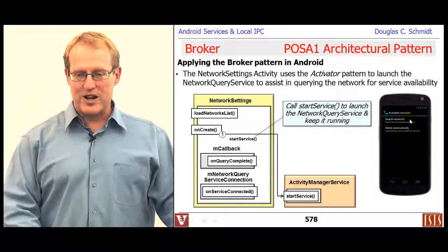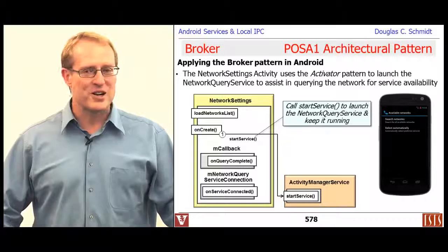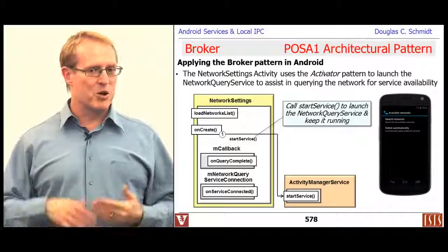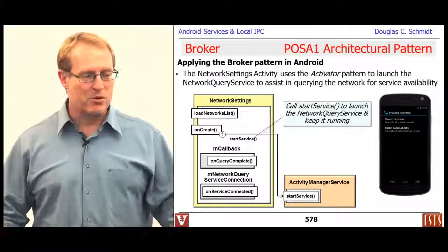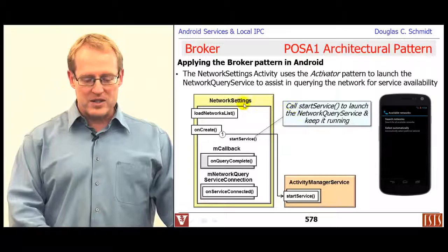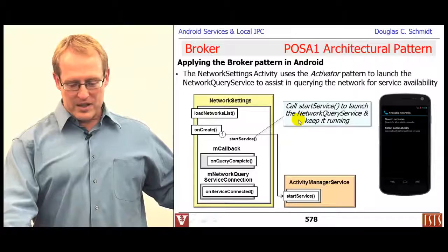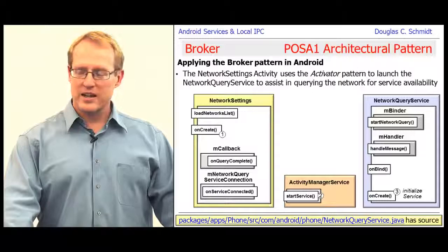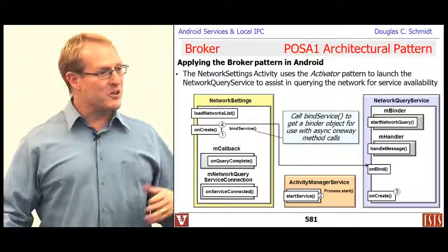This example uses the Network Settings activity — there's a screenshot showing what the app looks like. Basically it searches for cellular networks like CDMA or GSM, or multiple providers, depending on your service. There's an activity called NetworkSettings that invokes startService, which causes the activity manager service to start up the NetworkQueryService using the activator pattern. Then that service gets initialized.